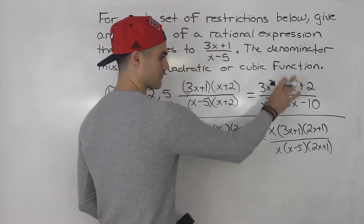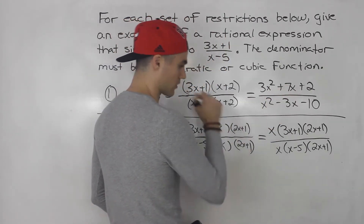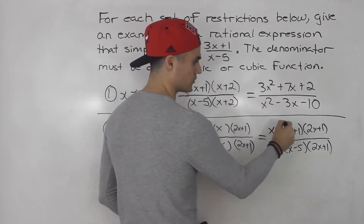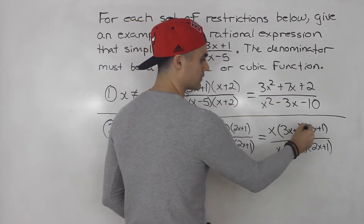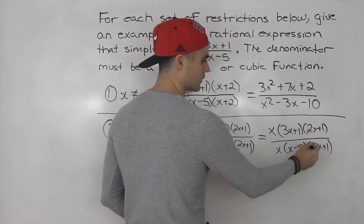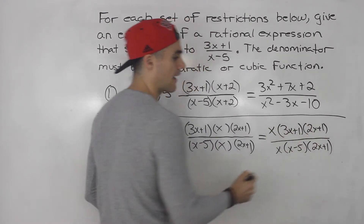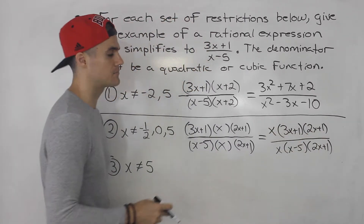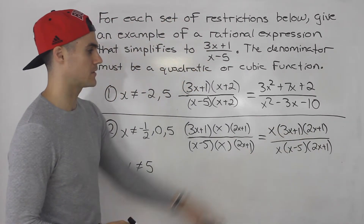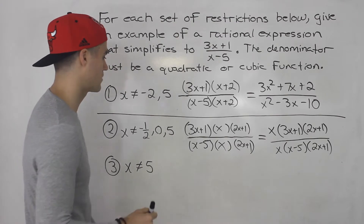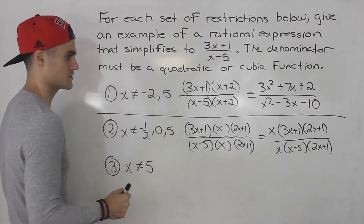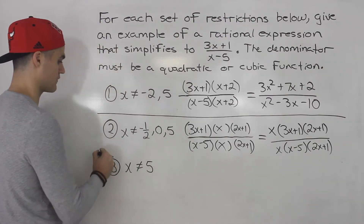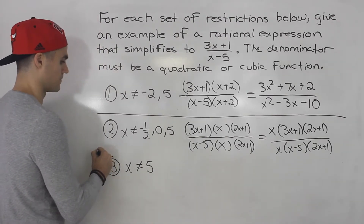You can have it in expanded form — you would foil out these two brackets, foil out those two brackets, then distribute the x inside. But I'm just going to keep it in factored form for number 2.